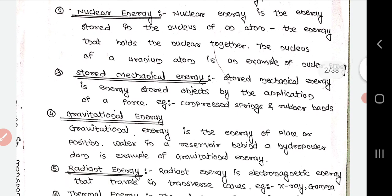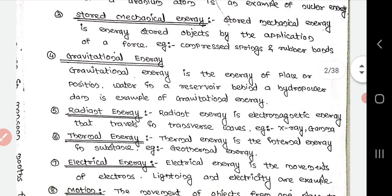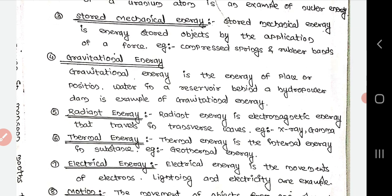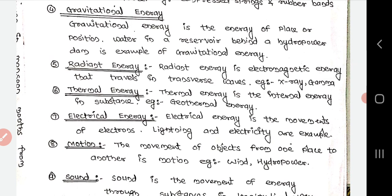Nuclear energy is the energy stored in the nucleus of an atom — the energy that holds the nucleus together. The nucleus of a uranium atom is an example of nuclear energy. Stored mechanical energy is energy stored in objects by the application of force — examples include a compressed spring and a rubber band. Gravitational energy is energy of place or position; water in a reservoir behind a hydropower dam is an example.